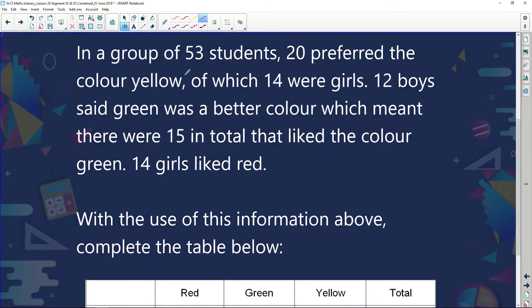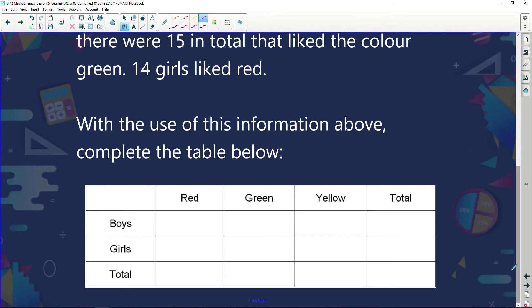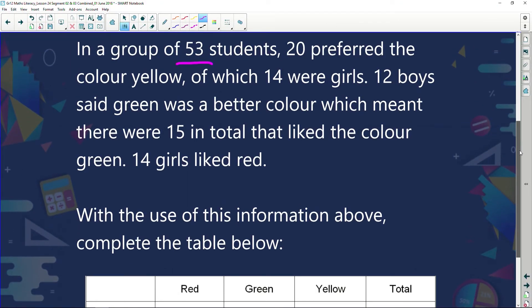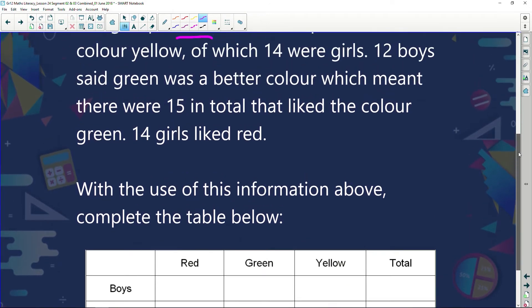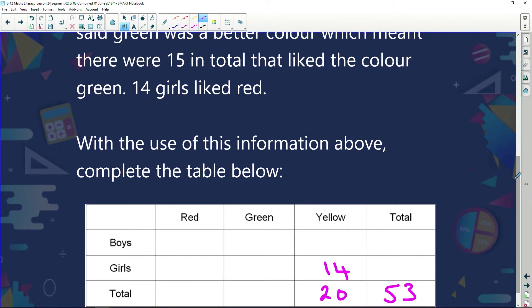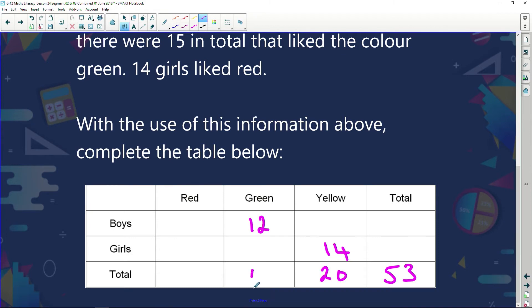Let's have a look at it. In a group of 53 students—how many students? Total of students, 53. Take note, as I'm reading, I'm filling in. Then, 20 preferred the colour yellow, of which 14 were girls. So 20 students liked yellow. Of that, 14 of them were girls. 12 boys said green was a better colour, which meant there were 15 in total that liked the colour green. Total of the green, 15. 14 girls liked red. 14 girls liked the red colour. Now we have to complete this table. So let's fill in all the missing bits.